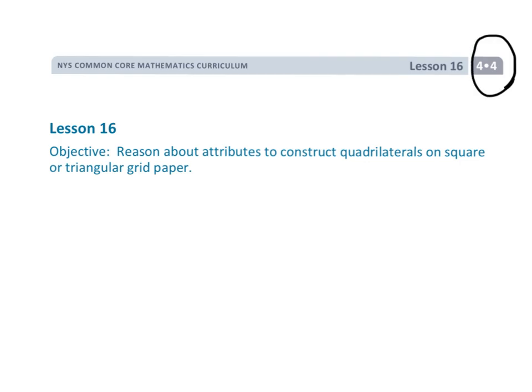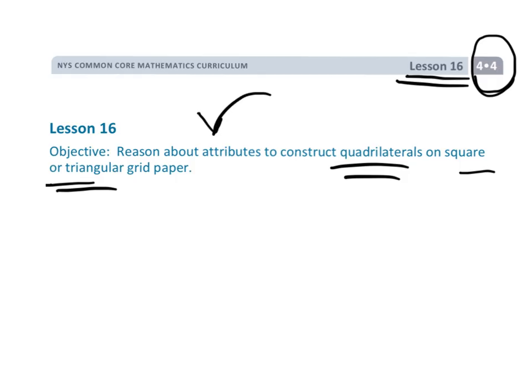Alright, this is 4th grade, Module 4, Lesson 16, and we're going to continue talking about quadrilaterals, only this time we're going to be using some square and triangular grid paper to kind of reason about the attributes of these quadrilaterals.